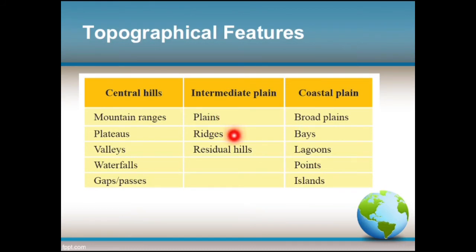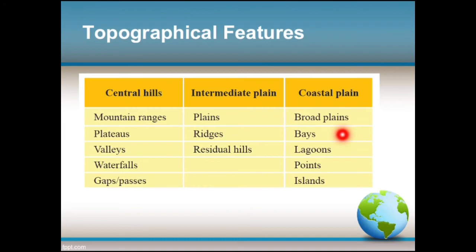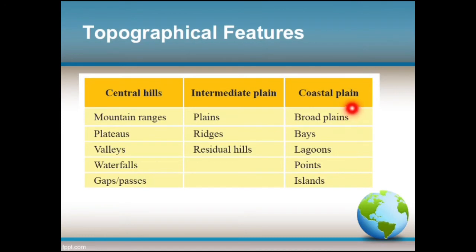Plains, ridges, and residual hills are the relief features of the intermediate plain. Broad plains, bays, lagoons, points, and islands are the relief features of the coastal plain. Let's look at some examples of these relief features.